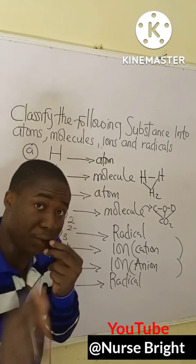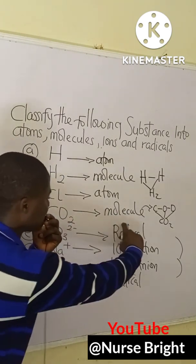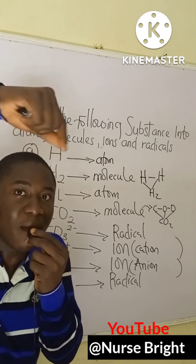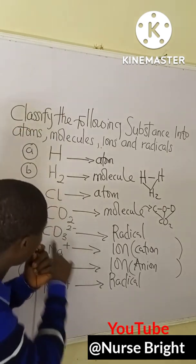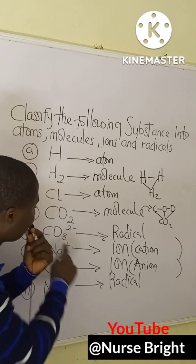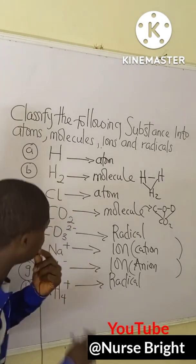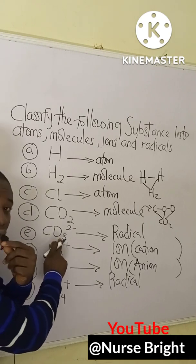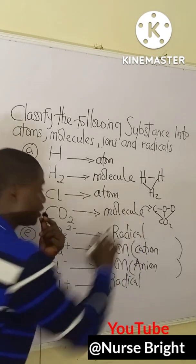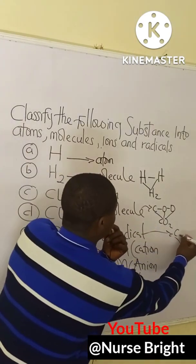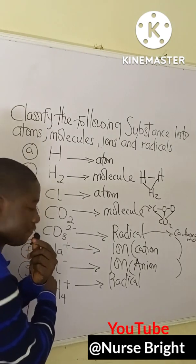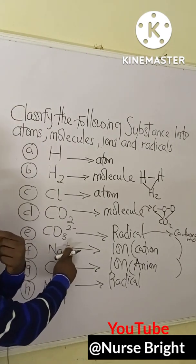Option E is CO₃²⁻. This is a radical because it is made up of various atoms bearing a charge. We have a carbon atom and three oxygen atoms, all bearing a particular charge. A group of atoms bearing a charge forms a radical. This radical is called the carbonate radical.